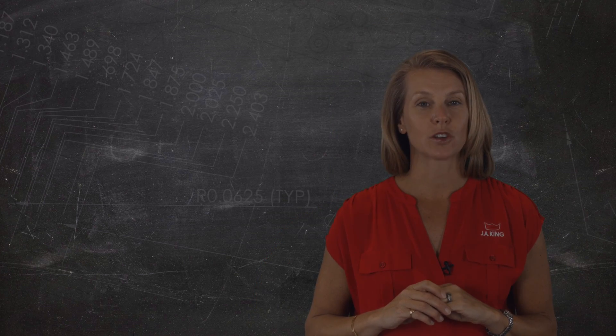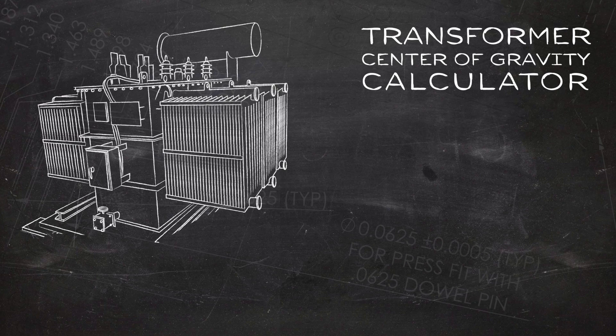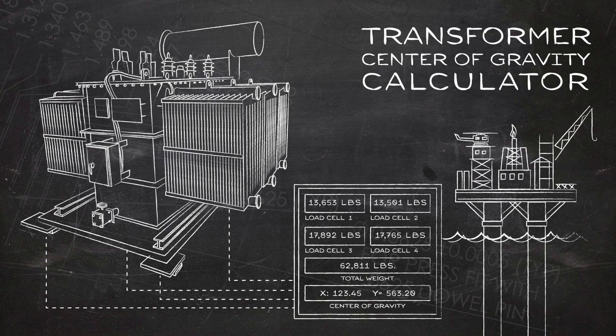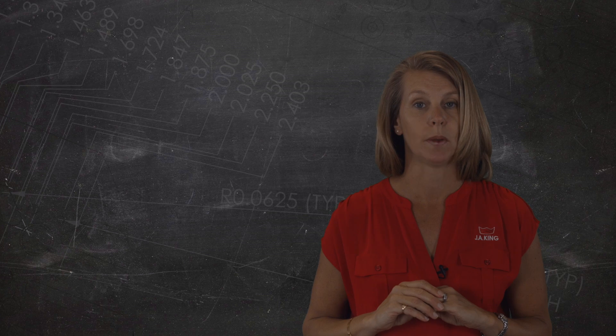A global manufacturer of power equipment needed a way to obtain the center of gravity for their transformers going onto offshore oil rigs. J.A. King designed a four-load cell frame with software to calculate the center of gravity for these 50,000-pound pieces of equipment.